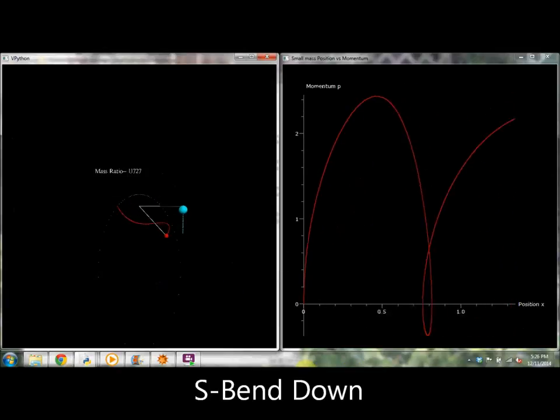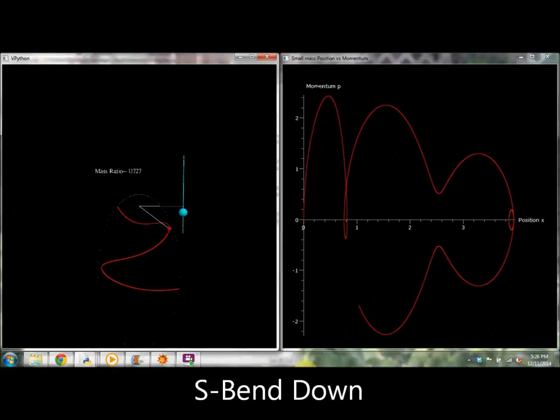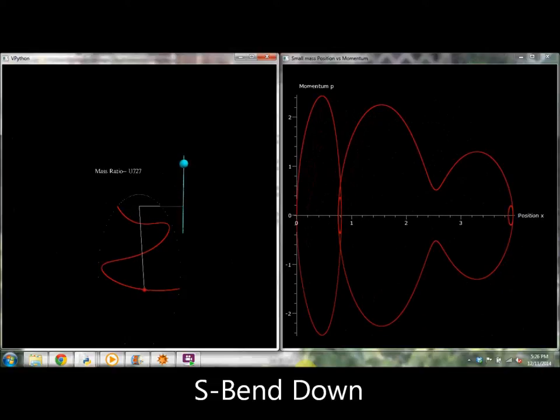The periodic orbit here seems to break the boundary condition on the string. However, the length of the string can be lengthened without affecting the equation of motion. So we can still include this example as a periodic orbit.